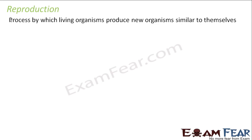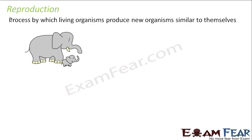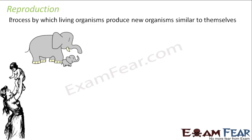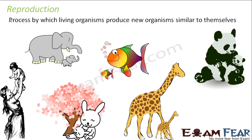Let us now talk about the next characteristic, that is reproduction. Reproduction is the process by which living organisms produce new organisms similar to themselves — giving birth to young ones which look similar. Like a baby elephant will look very similar to an elephant, and not like a lion, tiger, or human being. Similarly, a human baby will look very similar to a human being, and even more similar to the parents. So their offsprings look very similar to them.